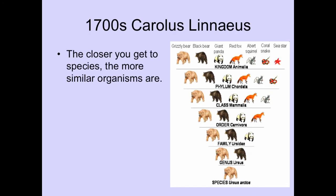The closer you get to the species, the more similar the organisms should be. So a starfish compared to a grizzly bear shares nothing similar except that they're both animals, whereas a black bear and a grizzly bear are very closely related.